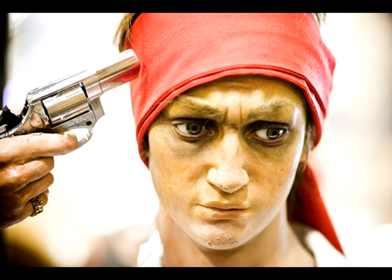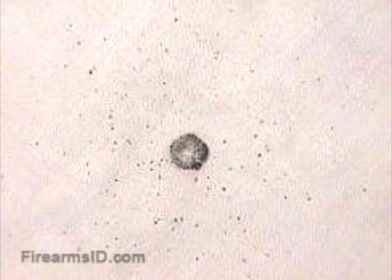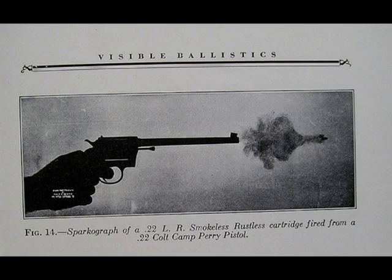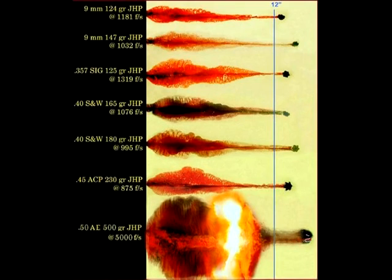A contact shot, when the weapon is held against the surface of the target, will not leave residues around the wound, but rather in the underlying tissues through which the bullet has passed. The powder residue produced can form many different patterns depending on the gun and ammunition. Examiners usually fire the suspected weapon to create test patterns, which can then be compared to the patterns of the residue found on the victim.